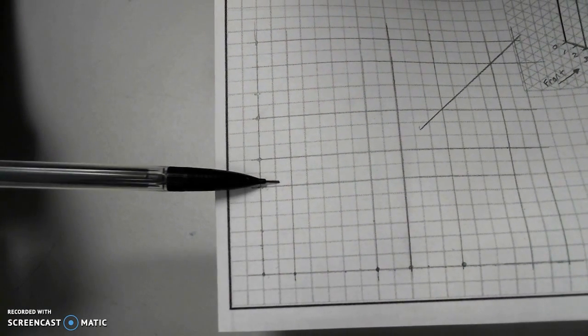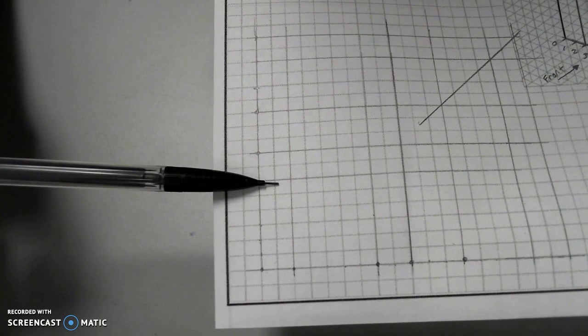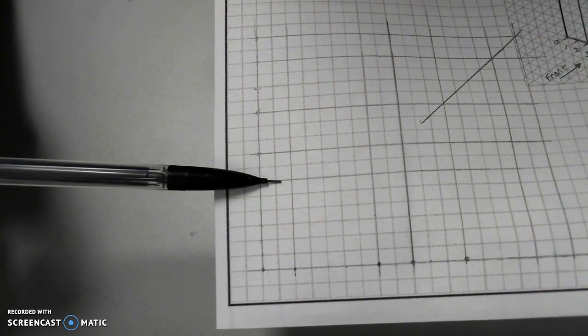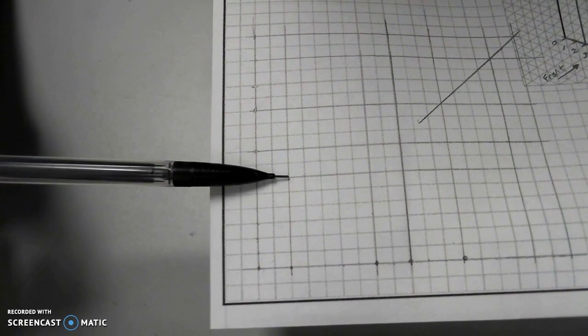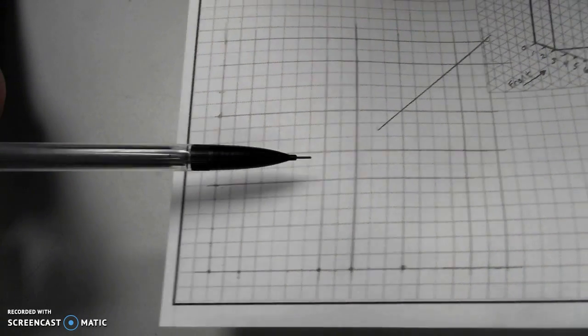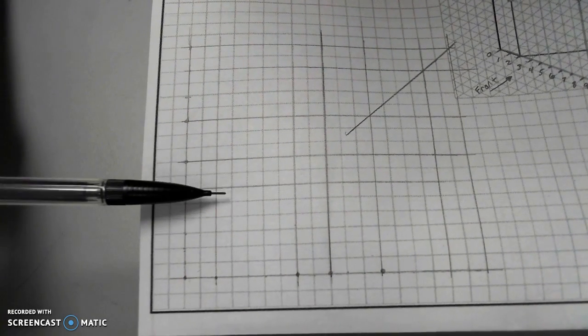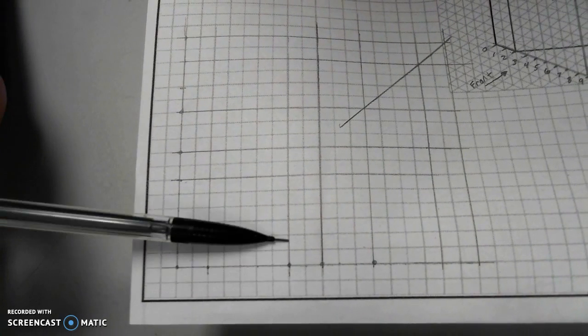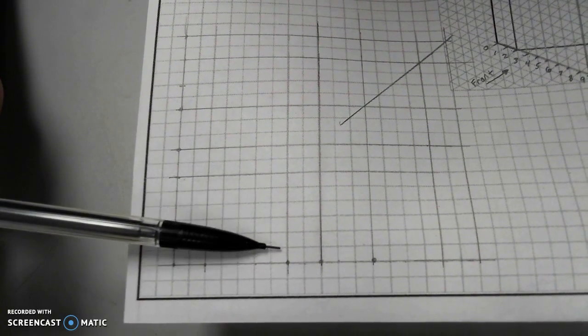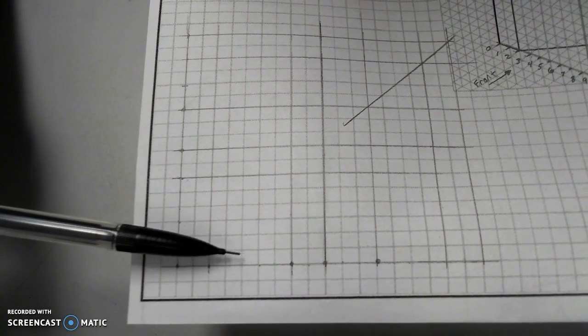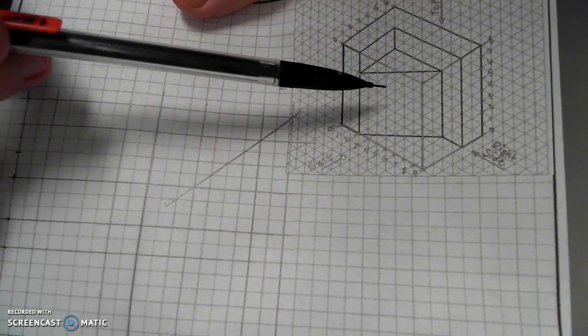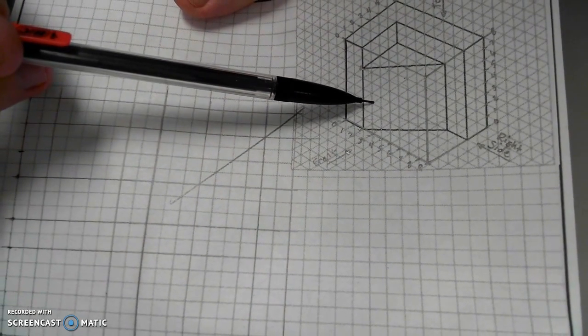This little square is only there as a construction line because this particular edge will only start right here, and it will end over here. So this space, 6 by 5, will be how I represent this angled face.